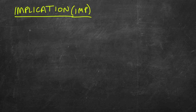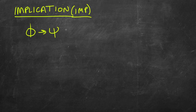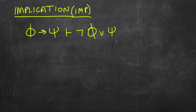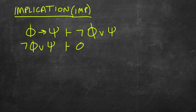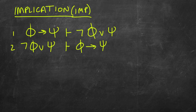Let's start by stating the form or structure of implication. What this rule states is: if you have a conditional — say phi then psi — you can reason to a disjunction: not phi or psi. So if you have this conditional, you could transform it into a disjunction. Similarly, if you had a disjunction where one of the disjuncts is negated, you could reason to a conditional: if phi then psi.